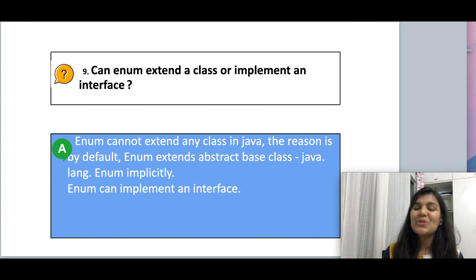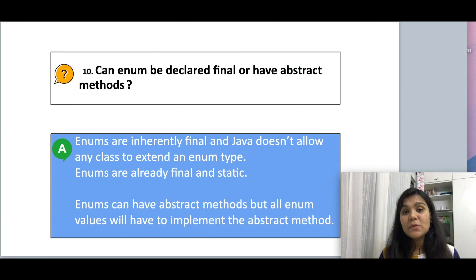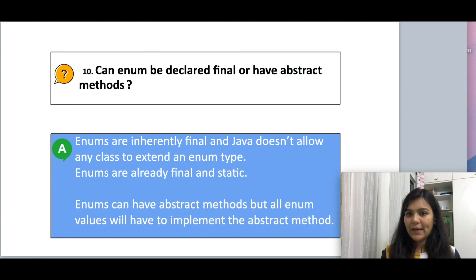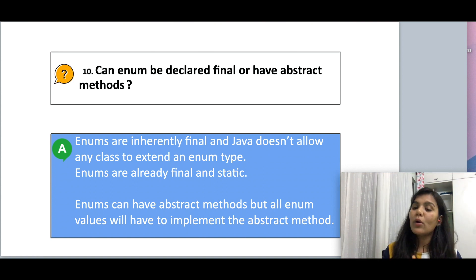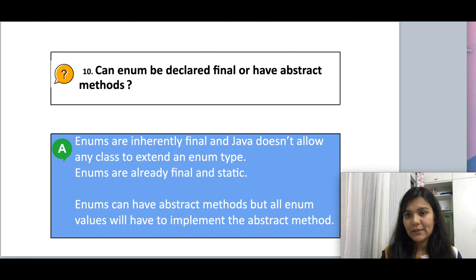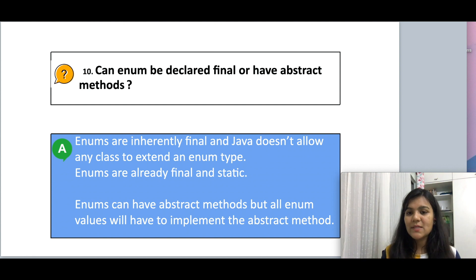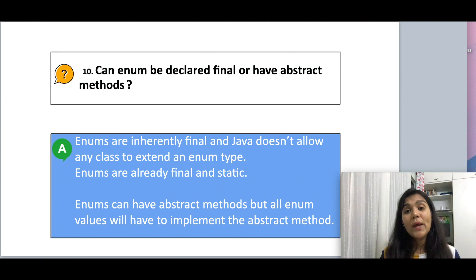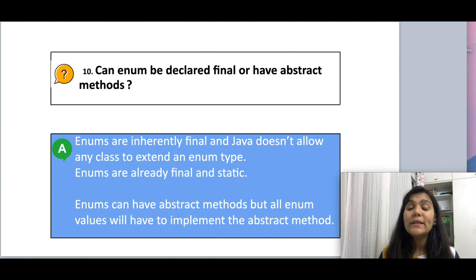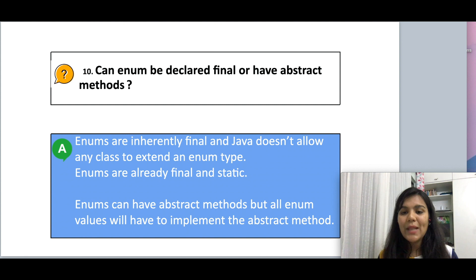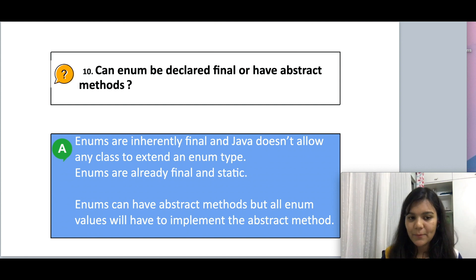Moving on to the next question: can enums be declared final or have abstract methods? Enums are already final and static — they are inherently final and Java doesn't allow any class to extend an enum type. Enums can have abstract methods, but there is an important condition: all enum values will have to implement the abstract method.